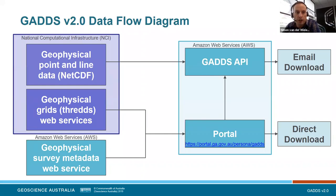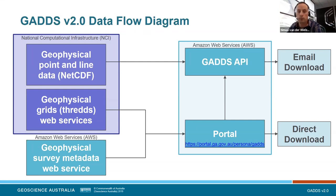This is a simplified data flow diagram. We have NetCDF data and web services hosted at NCI, and we're using Amazon Web Services for the GADS API and portal. GADS users will receive a download email, but there's also direct access to the data via the portal, which I'll explain later. We've also created a user guide, and if people have bookmarked the old GADS portal, that will now redirect to the new version.